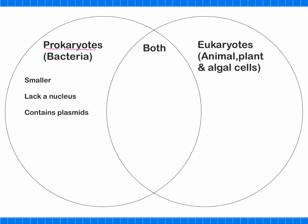And as you can see, they are smaller, they lack a nucleus and they contain plasmids and these are made of DNA. Whereas eukaryotes, they are larger. Plant cells are larger than animal cells. They have a nucleus. They have what we call a true nucleus, which contains DNA and multiple chromosomes.